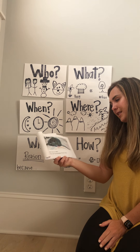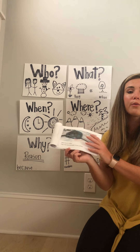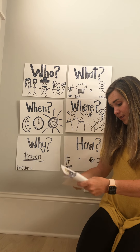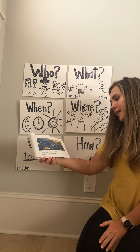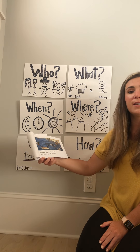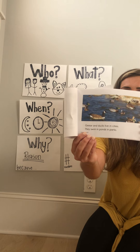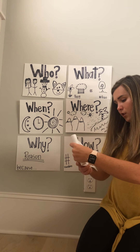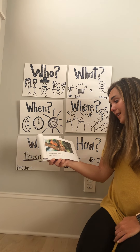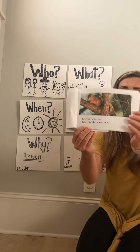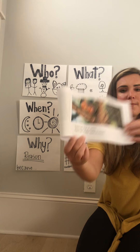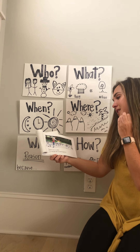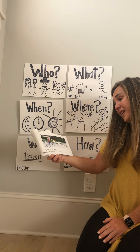Mice live in cities. They eat food people throw away. Geese and ducks live in cities. They swim in ponds and parks. Squirrels live in cities. Squirrels make nests in trees.